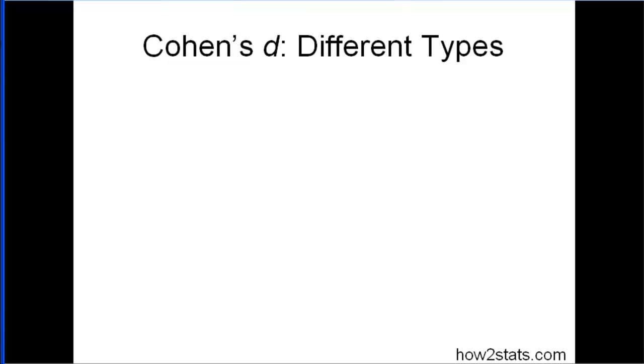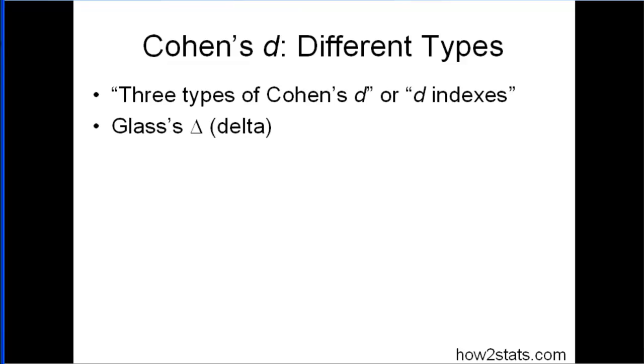So I'm going to also go through the Cohen's D different types. So the three types of Cohen's D or D indexes: Glass's delta, Cohen's D, and Hedge's G.